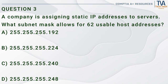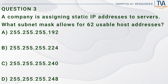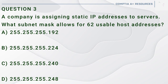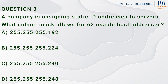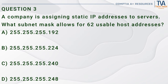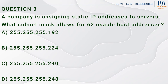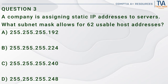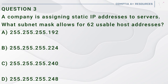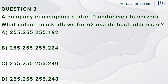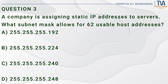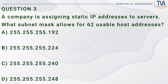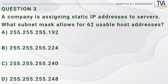Question 3. A company is assigning static IP addresses to servers. What subnet mask allows for 62 usable host addresses? A. 255.255.255.192. B. 255.255.255.224. C. 255.255.255.240. D. 255.255.255.248.